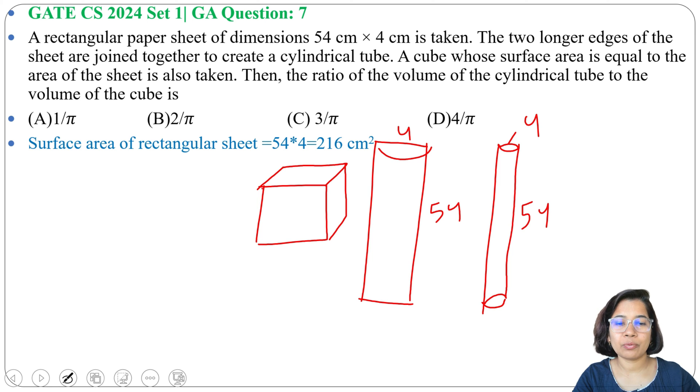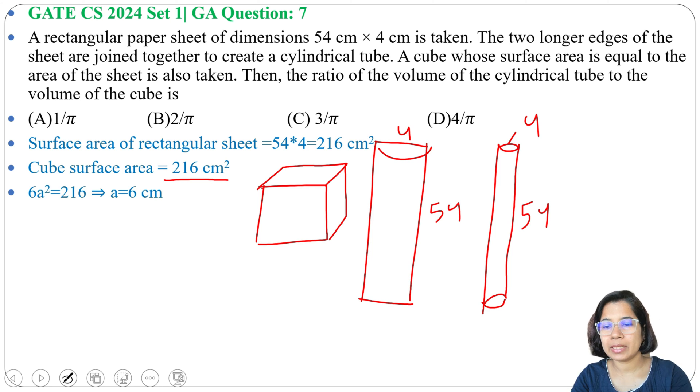So 54 × 4 is 216 cm². And this cube surface area is same as this rectangular surface area. So cube surface area is also 216 cm². Now from this cube surface area we can find cube side. So 6A² equals to 216, A will be 6 cm. So here one side is 6 cm.